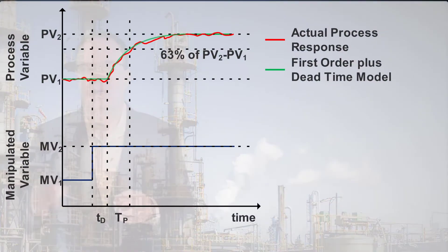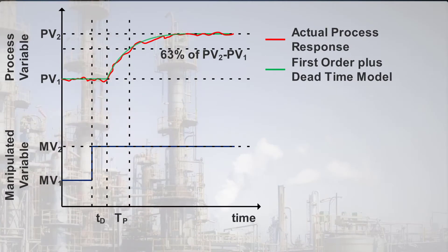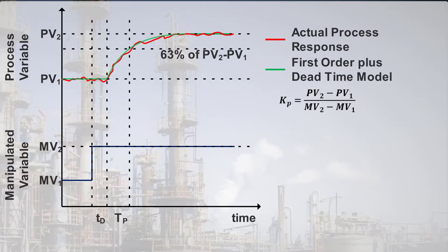Next, dynamics. We need to be able to speak about the magnitude of the response of a process variable to a manipulated variable, and the speed of that response. There are many different types of response possible, but in practice, we can approximate most of those responses with three parameters. First, the gain, K sub P, is the ratio of the steady-state change in the process variable to a change in the manipulated variable.